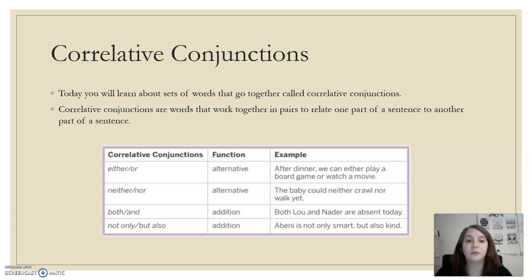After dinner, we can either play a board game or watch a movie. Notice how they're both in that sentence and they kind of correlate with each other. They connect. The baby could neither crawl nor walk yet. Both Lou and Nader are absent today. And Abeni is not only smart, but also kind. So these are conjunctions that correlate with each other. They go hand in hand in a sentence.